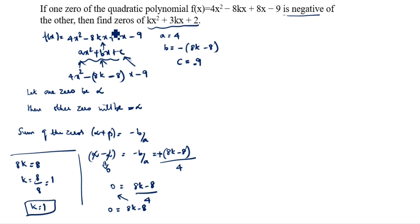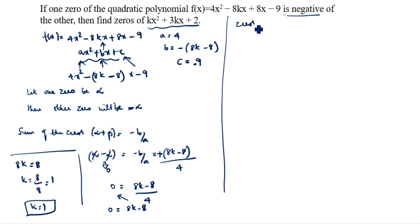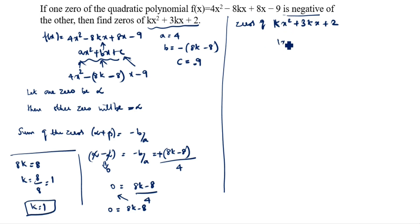Now we will substitute k = 1 into the equation kx² + 3kx + 2. So it becomes 1·x² + 3·1·x + 2, which gives x² + 3x + 2.